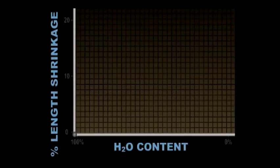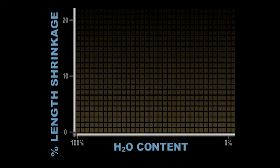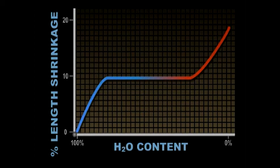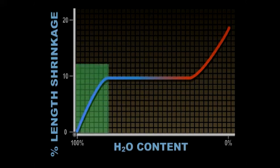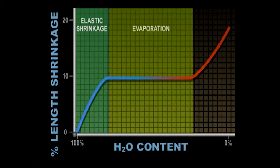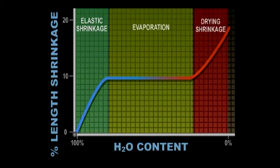All cotton knit fabrics have a common fingerprint for shrinkage. Shown here is a typical length shrinkage curve. The process shrinkage for the length is shown on the vertical axis, against the corresponding drop in moisture content as shown on the horizontal axis. This illustration shows the three distinct stages of shrinkage: elastic shrinkage, evaporation of water, and drying shrinkage.